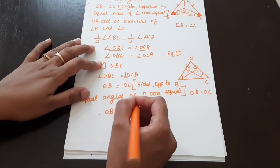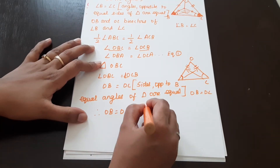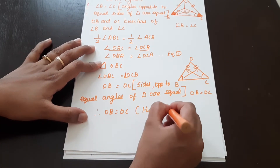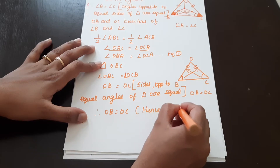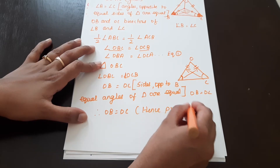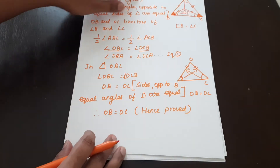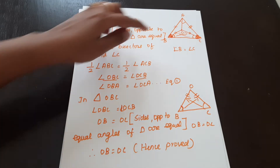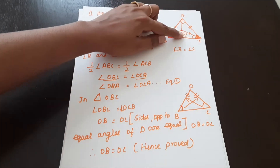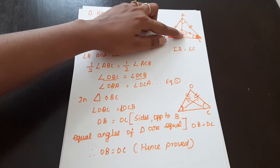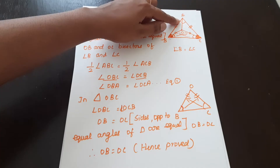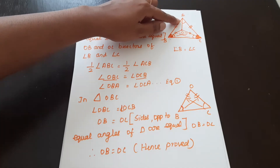Hence proved. So the first part is done. Now the next part: OA is the bisector of angle A. This we have to prove.